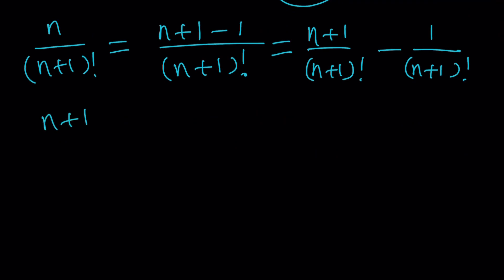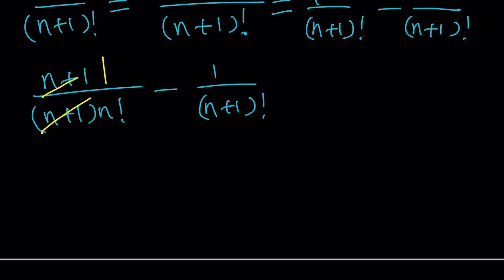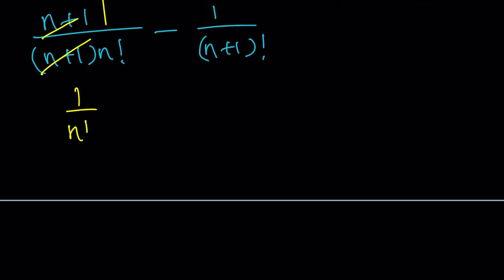n plus 1 factorial can be written as n plus 1 times n factorial. Obviously factorial can be expanded, and you can stop at any point. Now n plus 1 cancels out, leaving us with a telescoping sum: 1 over n factorial minus 1 over n plus 1 factorial.